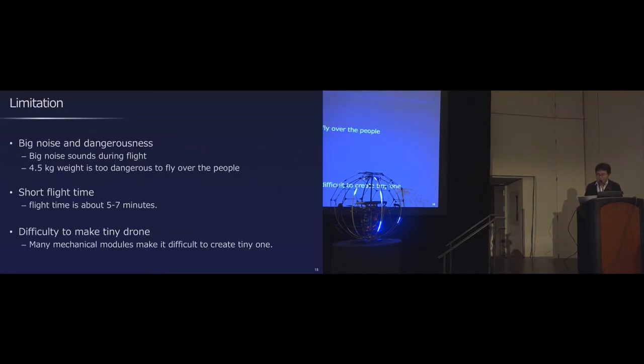However, the prototype has several limitations. First, the drone generates big noise while in flight. Besides, the weight is 4.5 kilograms. It's too dangerous to fly over people. And flight time is limited to around 5 minutes. And it is difficult to make a tiny drone because our system needs many mechanical modules. So to create a tiny ice sphere is still challenging.